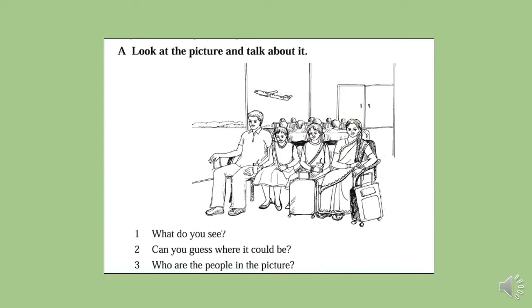Dear students, here is another picture. Look at the picture carefully. What can you see? Can you guess the place? Who are the people in this picture? Yes, it seems that this place is an airport and the people are some passengers waiting to fly. So let's start the class and find out if our guesses are correct.